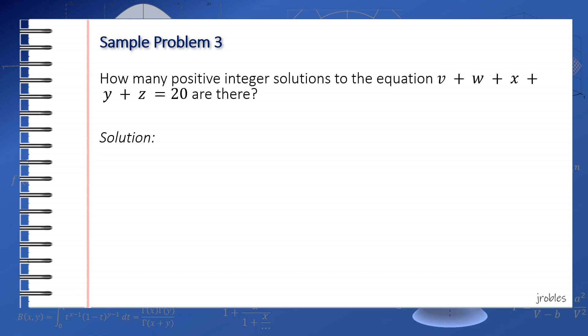A workaround to this problem is to rewrite each of the variables in terms of a dummy variable, say the primed variables v', w', up to z'. Suppose v = v' + 1, w = w' + 1, and so on. With this substitution, if we allow the prime variables to be 0, then the original variables will necessarily be greater than 0, and hence positive.